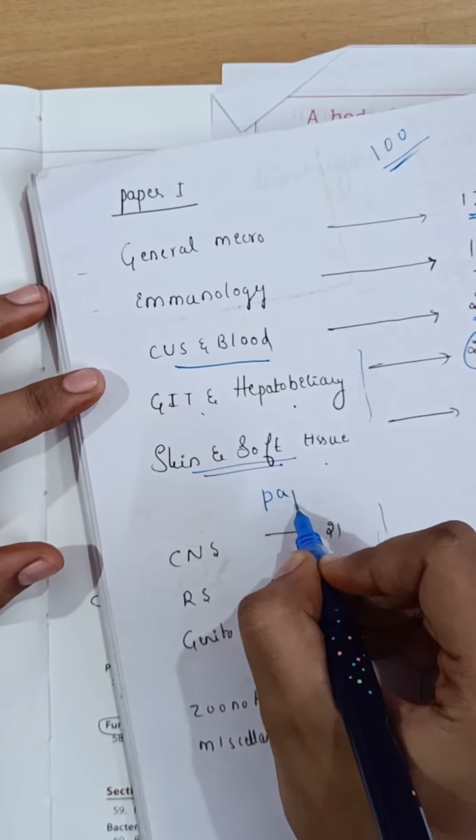Paper 2 will be completely systemic. CNS will have 21 marks, respiratory system carries more weightage with 26 marks, genitourinary tract infections have 21 marks, zoonotic diseases have the same, and miscellaneous topics have 11 marks.